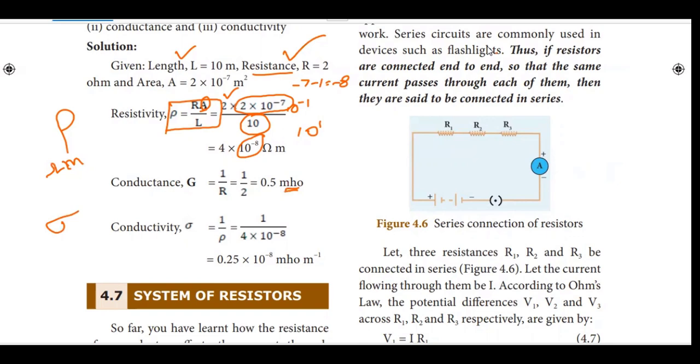Now conductivity, what is sigma? Sigma is rho inverse. Then we will show 1 by 4 into 10 to the minus 8. 1 by 4 is 0.25 into 10 to the 8. The conductivity is 0.25 into 10 to the 8 mho per meter. That is this answer.